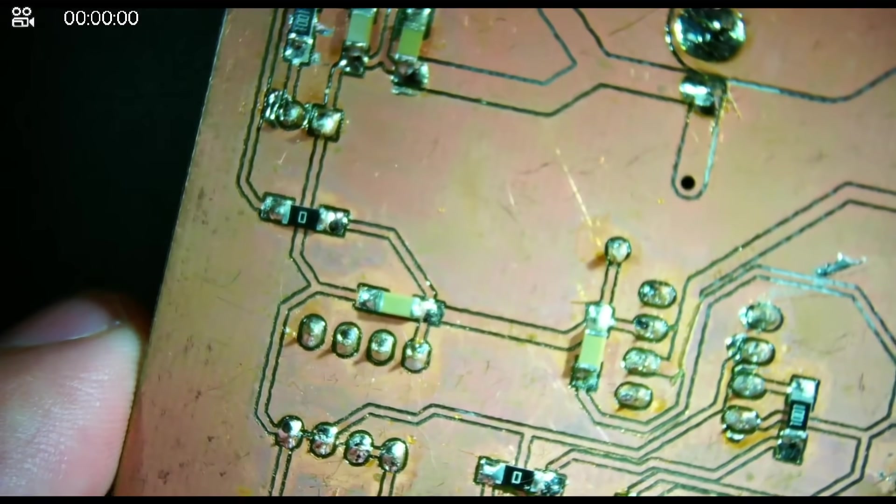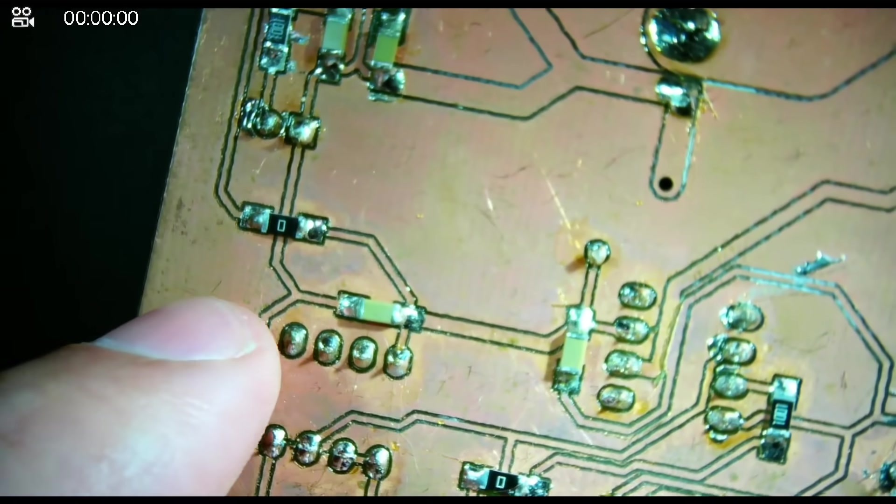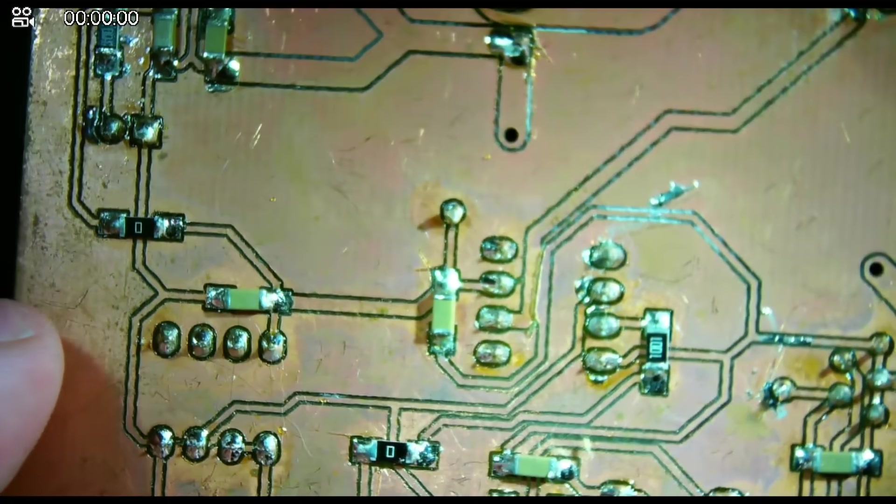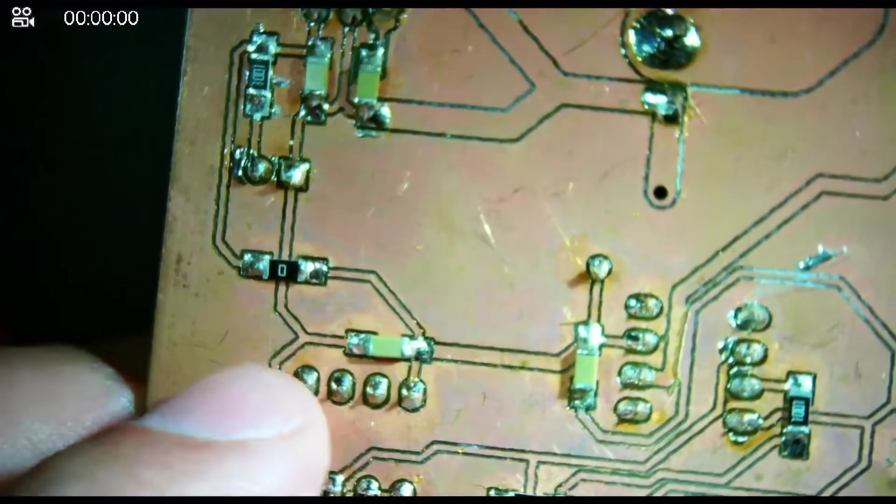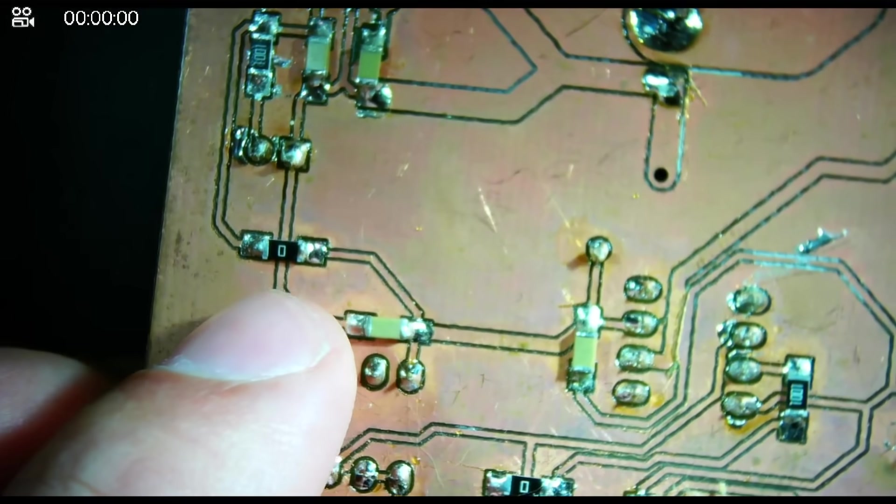So this is a board that I made in grad school. And you can see, I milled this on my own mill and there's all sorts of components on the back and front. But you can see right there, there's the zero ohm resistor.